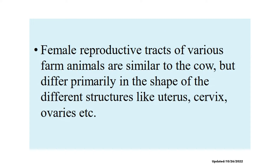The female reproductive tracts of various farm animals are similar to the cow, but differ primarily in the shape of the different structures like the uterus, the cervix, the ovaries, and others. It is the aim of this presentation to differentiate the different structures of the reproductive tract of female domestic animals, such as the different structures of the uterus, the cervix, and the ovary.